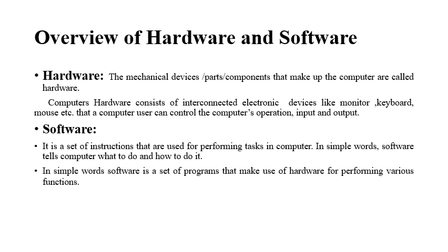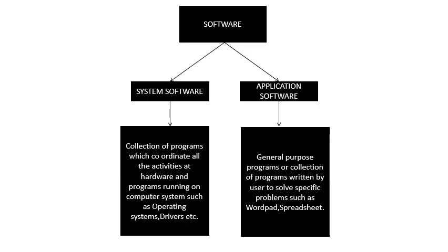Now we will see what software consists of and what the types of software are. Software is divided into two parts: system software and application software. System software — the name itself tells us — it refers to the software already present in the computer system. System software is a collection of programs used to carry out certain activities at the hardware level, coordinating together to perform certain tasks. The operating system and drivers are examples of system software.